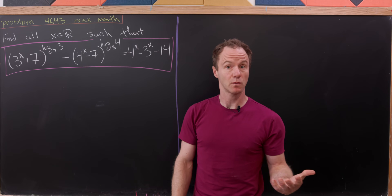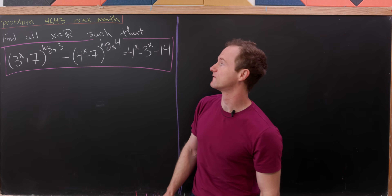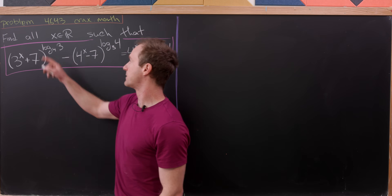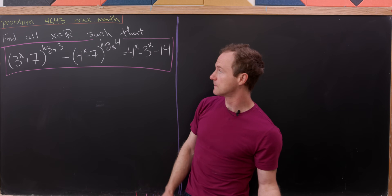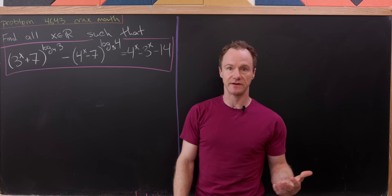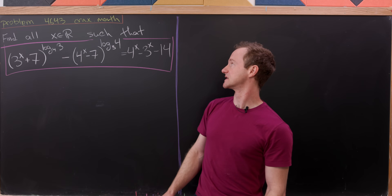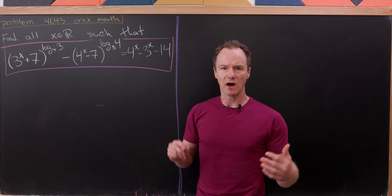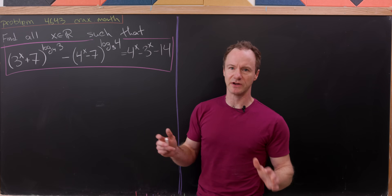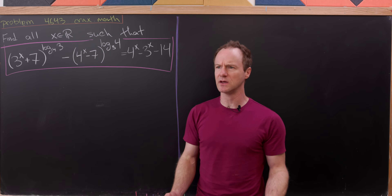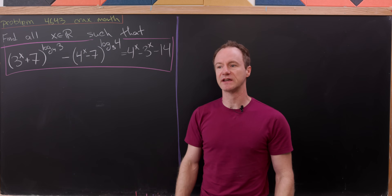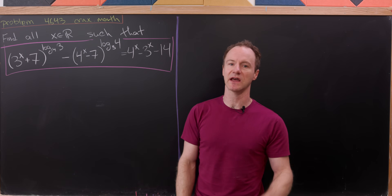Today we're looking at a pretty crazy equation. We're going to find all real numbers x such that 3 to the x plus 7 to the power log base 4 of 3, minus 4 to the x minus 7 to the power log base 3 of 4, equals 4 to the x minus 3 to the x minus 14. Obviously there's a lot going on here, and in fact if you were to write down a similar equation kind of at random it probably would be impossible to solve by hand. But this one is carefully constructed so that if we find a trick we can find a solution.